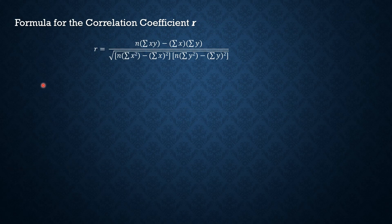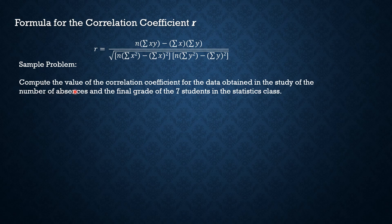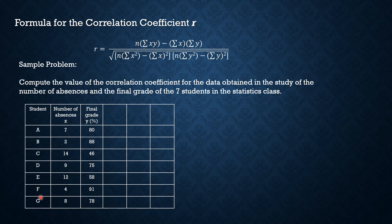Using the formula for the correlation coefficient r, let's compute the value for the data obtained in the study of the number of absences and the final grade of 7 students in a statistics class. By looking at the table, we can see that there are 7 students with their corresponding number of absences, x, and their corresponding final grade, y. To compute r, we also need to add columns for xy, x squared, and y squared.